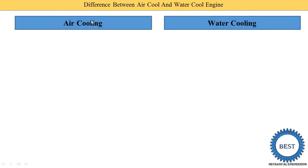Here on the left side is the air-cooled engine and on the right side is the water-cooled engine. From the name, we understand that air cooling means air is used for cooling the engine, and water cooling means water is used for cooling the engine.